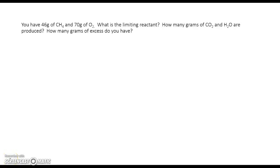This video is going to discuss how to do stoichiometry problems where you're not given pictures, but instead you're actually given words. In this scenario, you have 46 grams of CH4 and 70 grams of O2. You need to find the limiting reactant and how many grams of CO2 and H2O are produced, and if you have any excess. So the first thing, as you know,